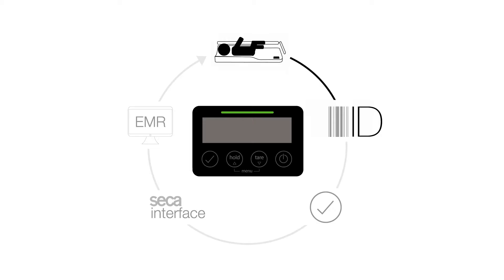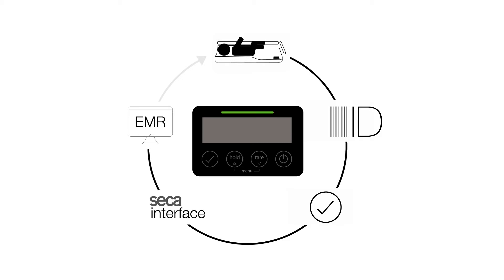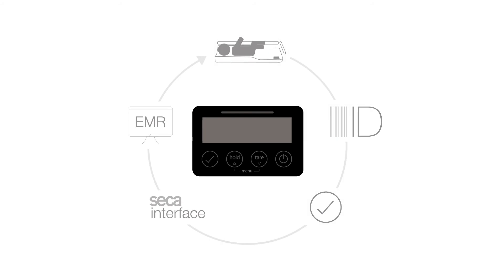That concludes the measurement and approves the measurement data to be sent to the EMR. During the transmission of the data to the EMR, the LED above the display flashes to indicate the transmission. When the data arrives in the patient's EMR, the LED stops blinking and remains lit for another 5 seconds. After that time, the LED turns off and a new measurement can begin.